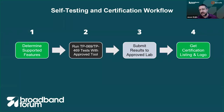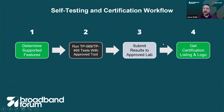The process looks like this: the first step for everyone is to determine your supported features, which determines which test cases are mandatory for you to run. Then run as many times as you want with the approved tool, submit those results to the approved lab, and you'll get your certification listing, the certified logo, and all of the benefits that you would normally have from getting that product certified.